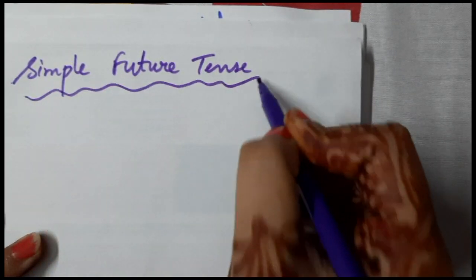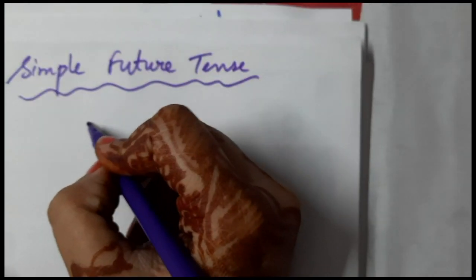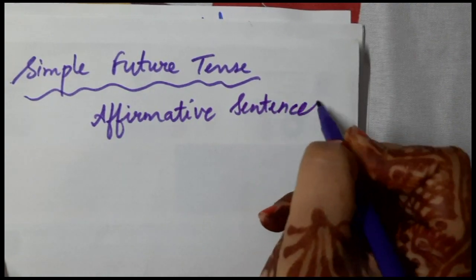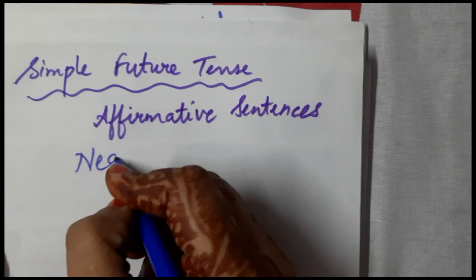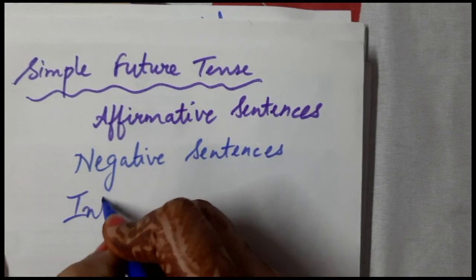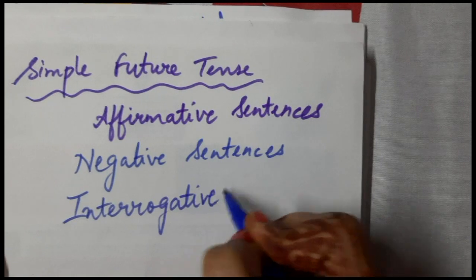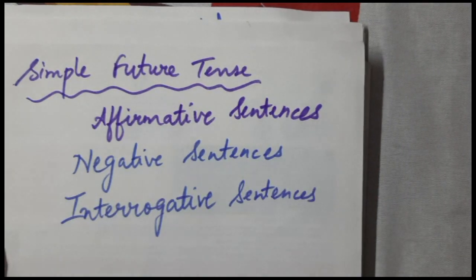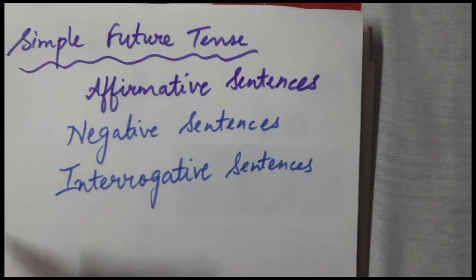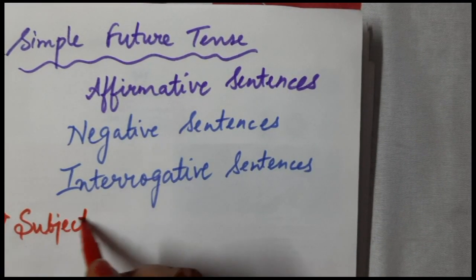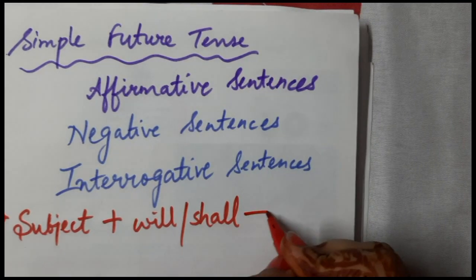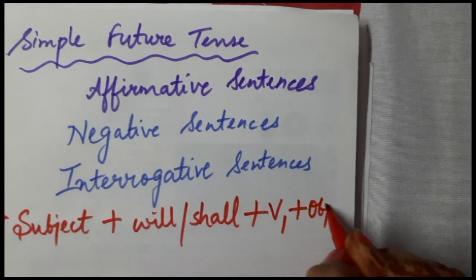As we had discussed the usage of this tense in making affirmative sentences, today we will talk about and learn how to make the negative and interrogative sentences using our simple future tense. I hope you remember which were the helping verbs used in making simple future tense. The rule is: subject, then the helping verbs will or shall, then your verb first form, and finally our object.